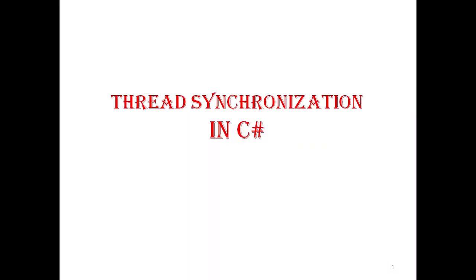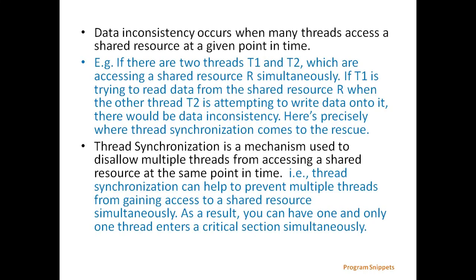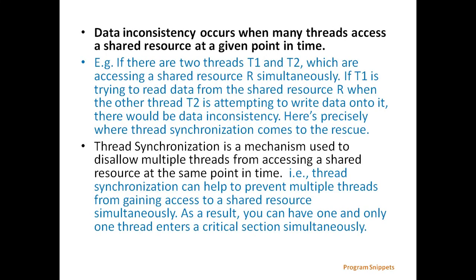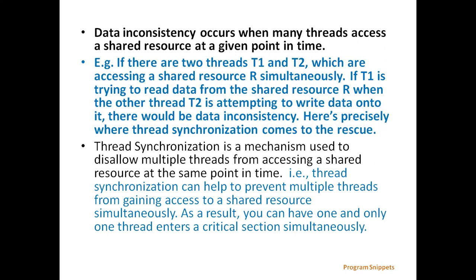Here we will see thread synchronization in C#. Data inconsistency occurs when many threads access a shared resource at a given point in time. For example, if there are two threads T1 and T2 which are accessing a shared resource R simultaneously, and T1 is trying to read data from R while T2 is attempting to write data onto it, there would be a data inconsistency. To avoid this, thread synchronization is used.